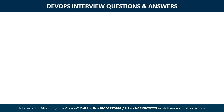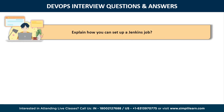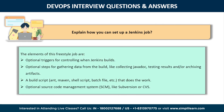The last question for this video is: explain how you can set up a Jenkins job. To create a Jenkins job, go to the top page of Jenkins, choose the new job option, and then select 'Build a Freestyle Software Project.' The elements of this freestyle job include optional triggers for controlling when Jenkins builds, optional steps for gathering data from the build such as collecting Javadoc, testing results, or archiving artifacts, a build script that actually does the work, and an optional source code management system like Subversion or CVS.